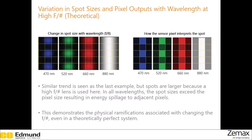Now, what if we used a slower lens — an f/8 lens in this case? As expected, the spot sizes will be much larger, and blue, green, and red light will cause energy spillage to adjacent pixels. Much more so in the case of 880 nanometer light. So now you realize how changing the f-number affects the theoretical performance of an imaging system.